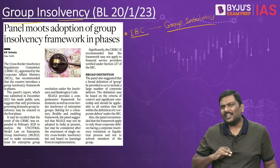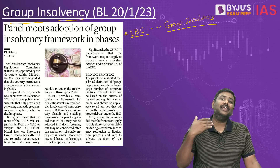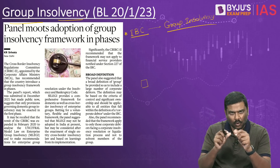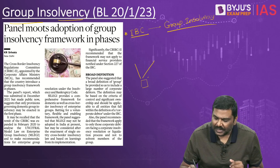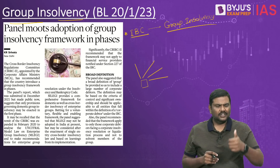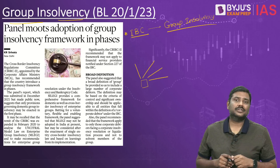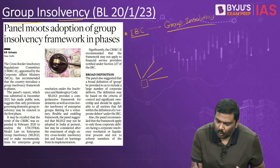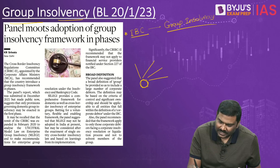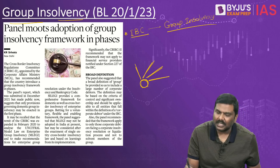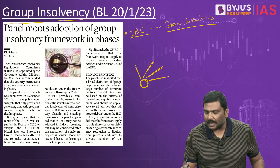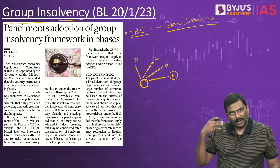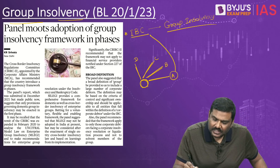What is the difference between individual corporate and group insolvency? Imagine a promoter who owns multiple companies — for example, JP Group, Adani Group, or Videocon (recently in the news for insolvency). There is one group of promoters owning multiple subsidiaries — Company A, B, C, D. If Company A takes a loan and is unable to repay, Company A's insolvency can be conducted under IBC individually.